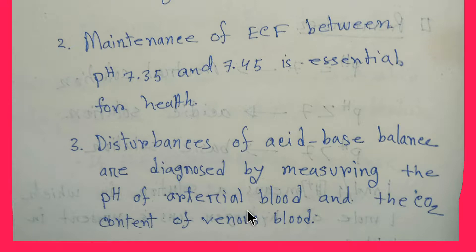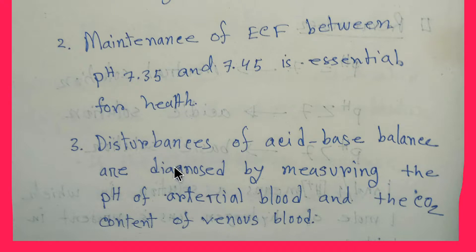Disturbances of acid-base balance are diagnosed by measuring the pH of arterial blood and the carbon dioxide content of venous blood.